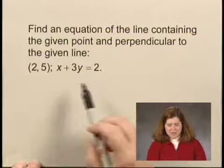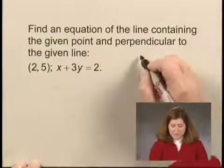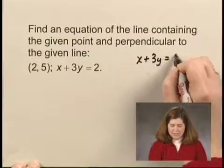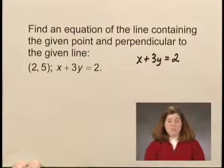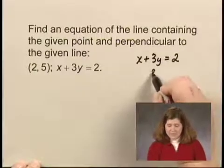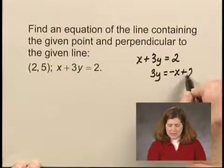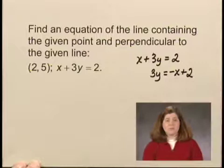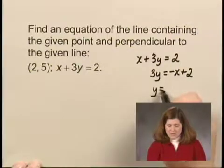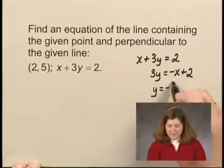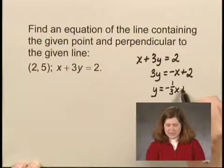So let's start by finding the slope of the line we're given. We have x plus 3y equals 2. I'm going to solve for y by subtracting x on both sides, and then dividing by 3 on both sides. y equals the opposite of x over 3, which is the same as negative 1 third x, plus 2 divided by 3 would be 2 thirds.